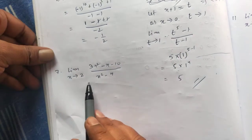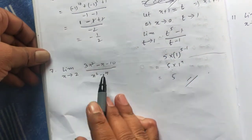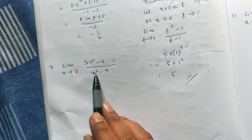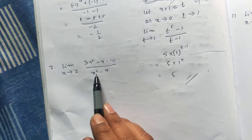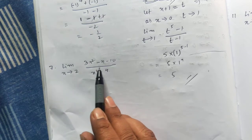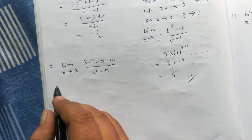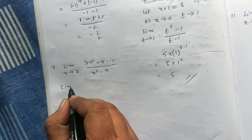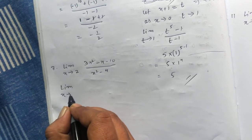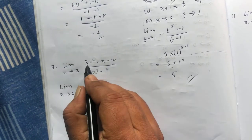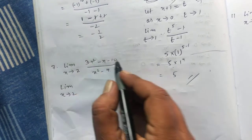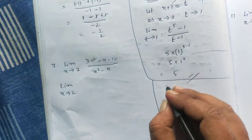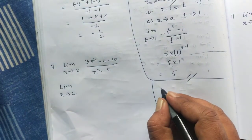Here, in this question, if I put 2, then x² = 4, 4 − 4 = 0, so the denominator becomes 0. That means we have to do factorization. So I'm doing the factorization.